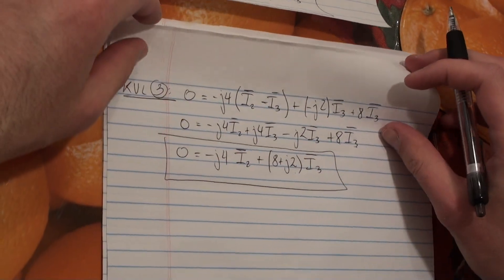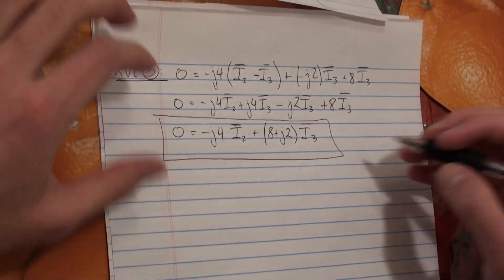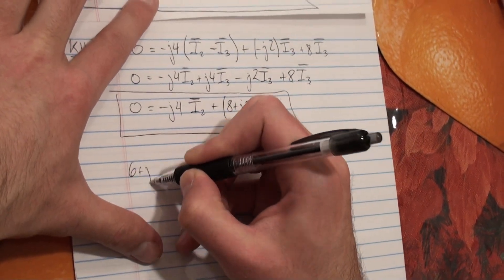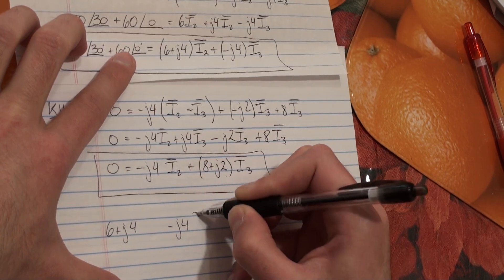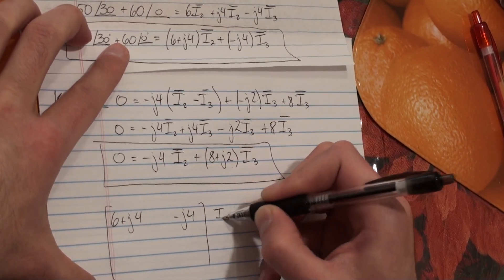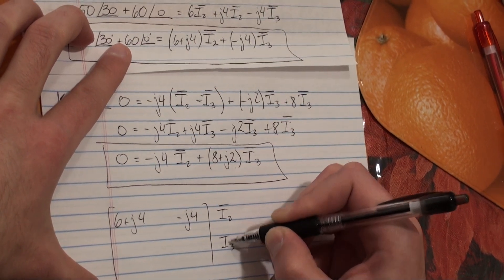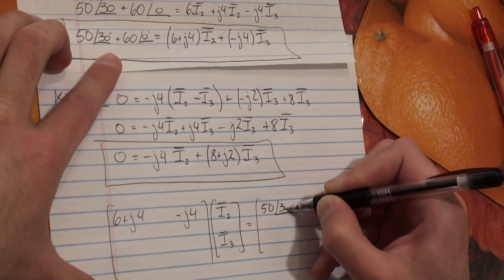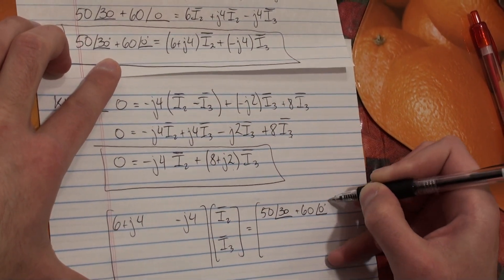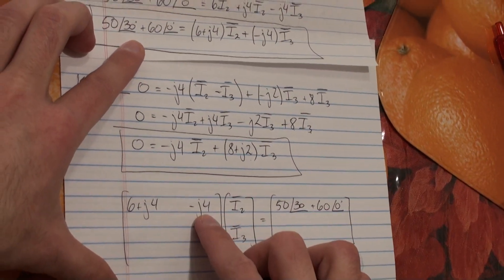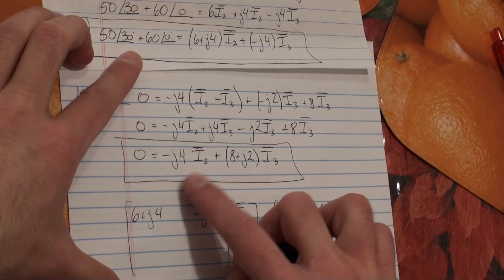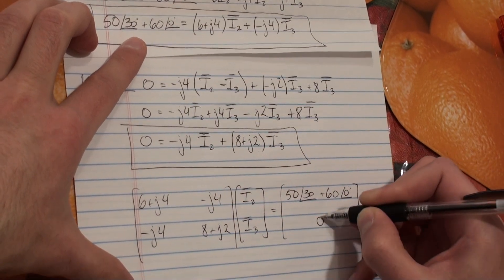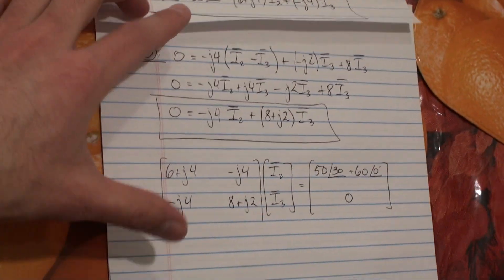So now, we can put this into a matrix form. So our first equation, in matrix form, it would look like this. You have the first equation here. You have I2, and you have I3. So the coefficients of your first equation and the constant at the end. Here, you have minus J4, this is going to be 8 plus J2 and 0.